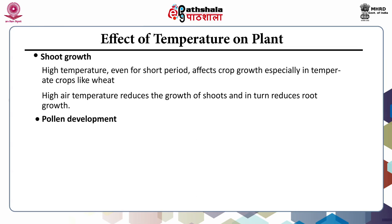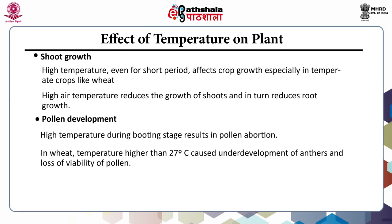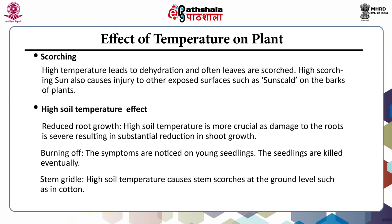High temperature also affects pollen development. High temperature during the booting stage results in pollen abortion. In wheat, temperatures higher than 27°C cause underdevelopment of anthers and loss of pollen viability. A temperature of 30°C for two days at the production-deficient stage was reported to decrease grain yield of wheat through drastic reduction in grain set. Additionally, high temperature leads to dehydration and scorching of leaves, and sun scald causes injury to other exposed surfaces such as the barks of plants.